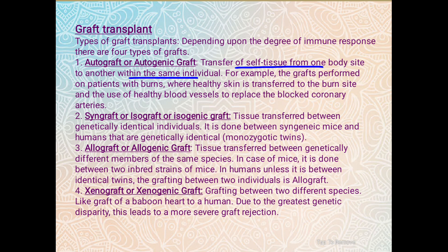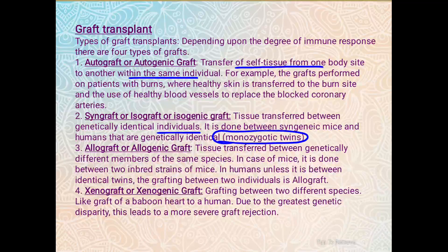Syngraft, also called isograft or isogenic graft, involves tissue transferred between genetically identical individuals. In mice, it is done between two inbred strains. In humans, genetically identical individuals are only monozygotic twins. Allograft or allogenic graft involves tissue transferred between genetically different members of the same species. Unless it is between identical twins, grafting between two individuals of the same species is an allograft.